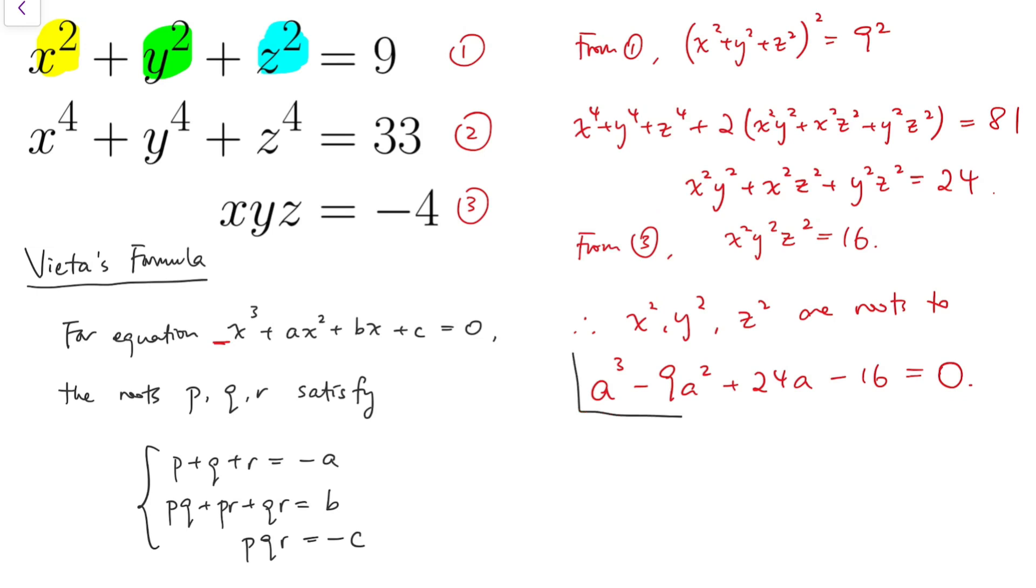Now, by looking at this cubic, we're going to try to find the values. We can factorize by noticing that a minus 1 is a factor. We get this by putting a equals 1 into the equation. So a minus 1 is a factor by factor theorem. And the rest would be a squared minus 8a plus 16, which is a minus 4 all squared, equals 0.